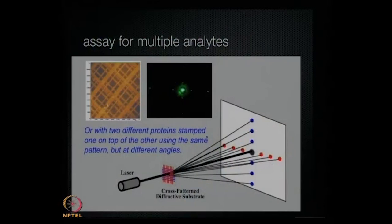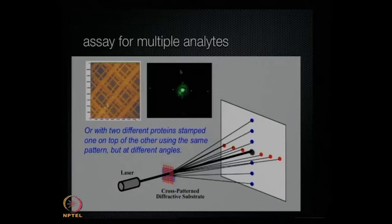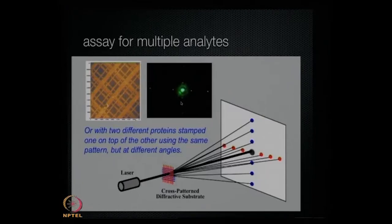If you have multiple analytes, you can have protein one in one direction and protein two as the other grating. You end up with two grating patterns. Here's a webcam image of what it would look like — this spot here will be due to protein one, whereas this spot perpendicular will be due to protein two. So if you introduce your medium and this spot lights up, you know there's binding to protein one; if the other spot lights up, there's binding to protein two. You can examine multiple analytes that way.